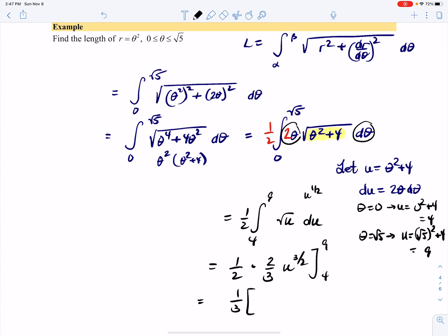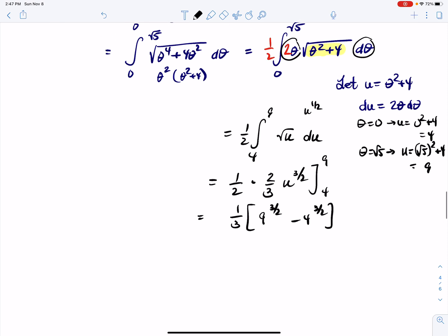Now we have (1/3)[9^(3/2) - 4^(3/2)]. We should simplify that. Remember the 3/2 power means take the square root and then cube. Square root of 9 is 3, and 3³ = 27.